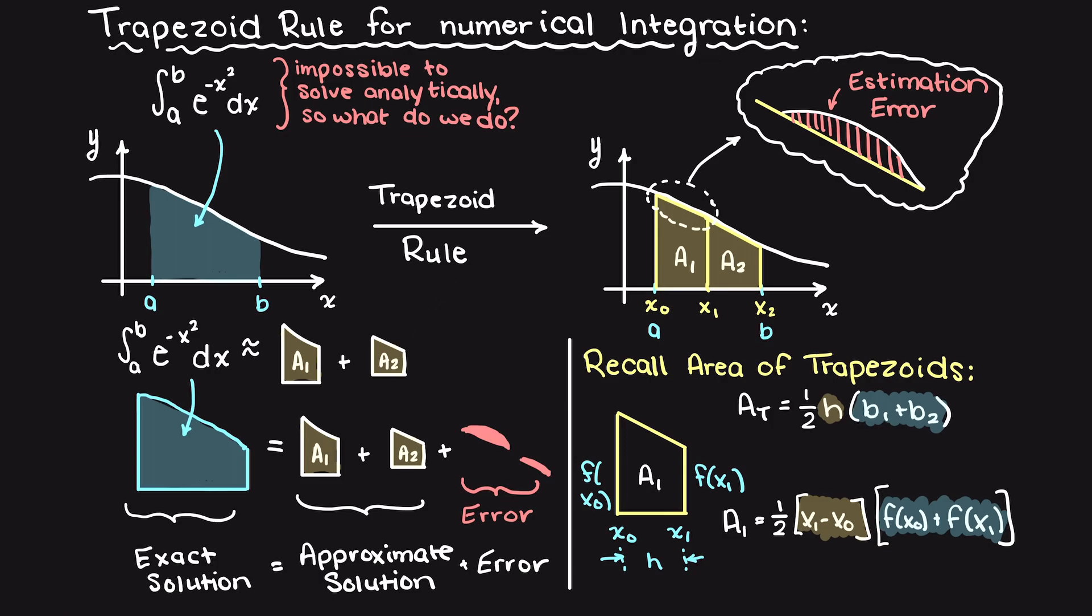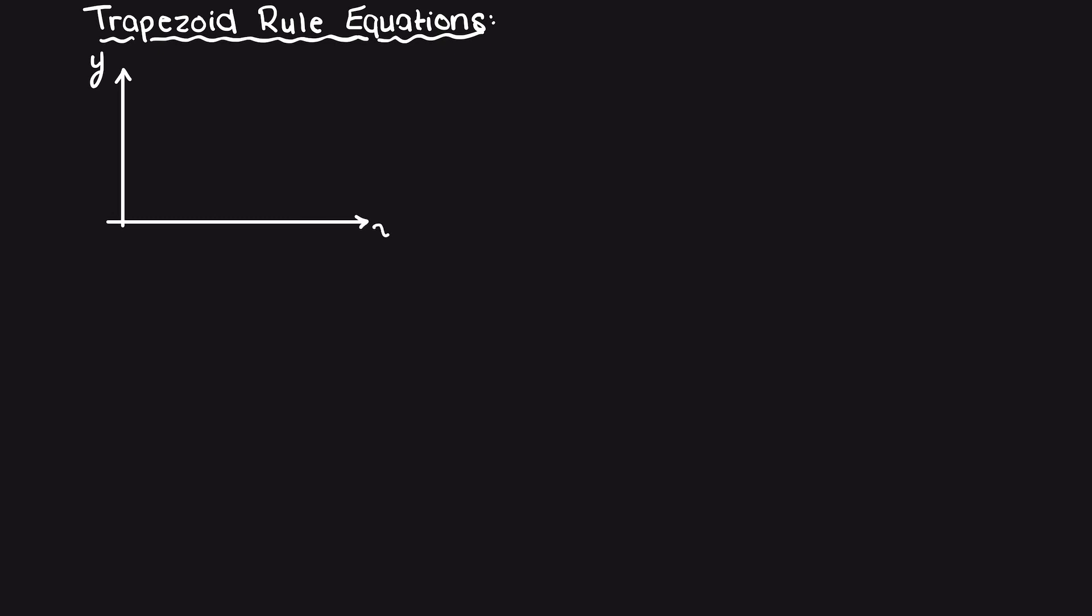Now that we have an understanding of what the trapezoid rule is, why we use it, and how we calculate the area of trapezoids, let's work out our actual trapezoid rule. So, let's create a small sketch here on the left and assume three areas that are all of equal sizing of delta x.